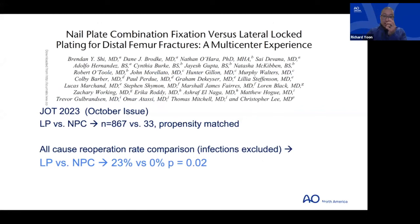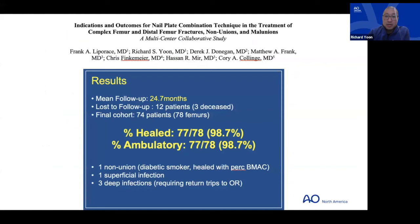Another paper from Chris published this past October, propensity-matched — which helps control for mismatch — noted a significantly lower rate of failure with nail-plate combination. We're learning more and more about where isolated implants might not work and where dual implants are going to be used. Our multi-center study of about 78 cases had only one reoperation — a diabetic smoker with an HbA1c close to 9 who eventually healed after optimization.